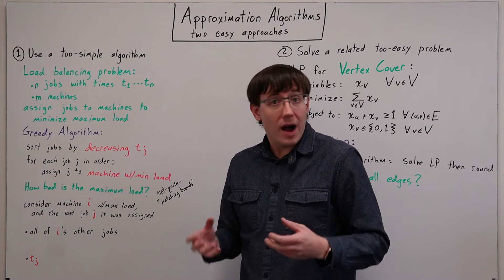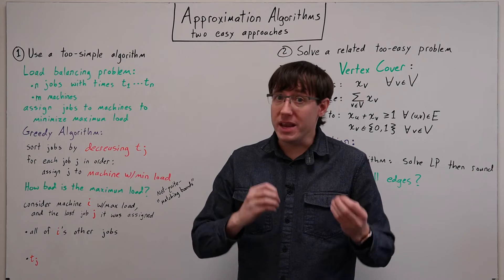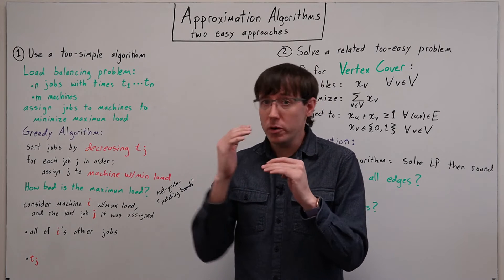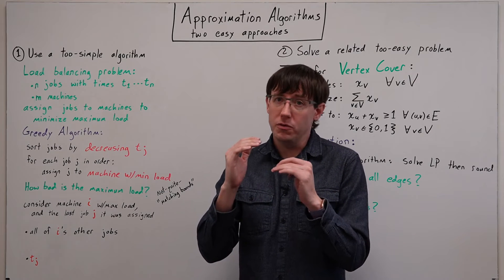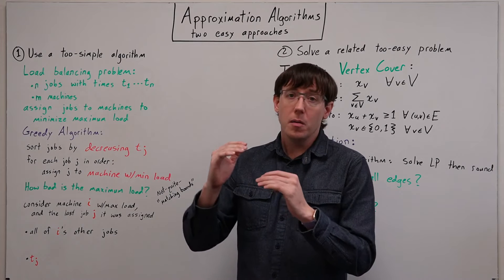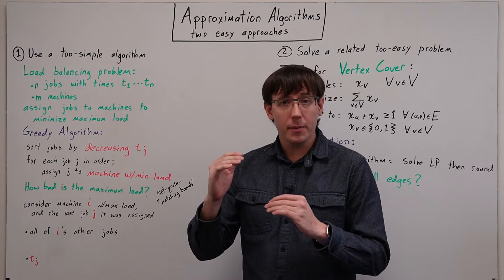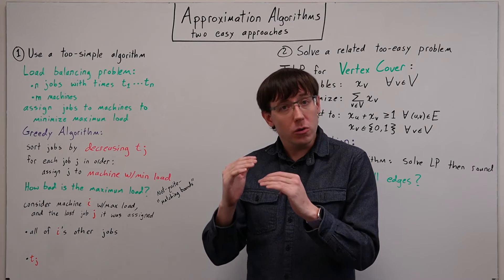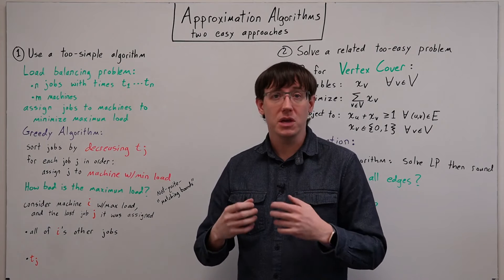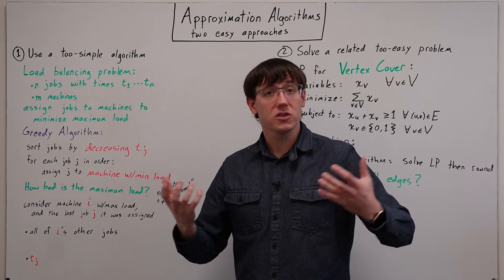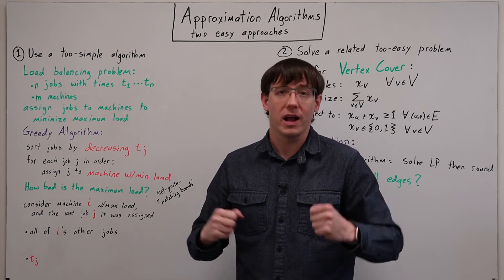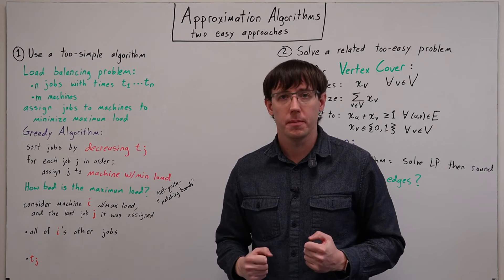Here, our algorithm isn't optimal, so we won't be able to prove that those bounds match. But we can think about how close those bounds are, and use that to give an approximation ratio for our algorithm.